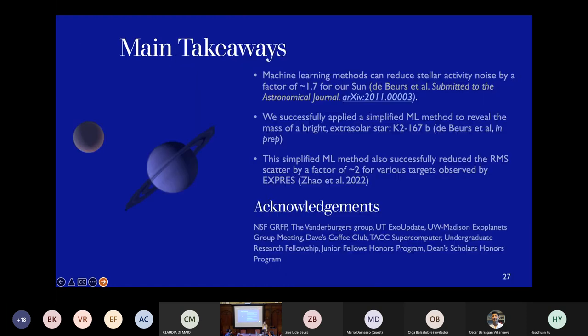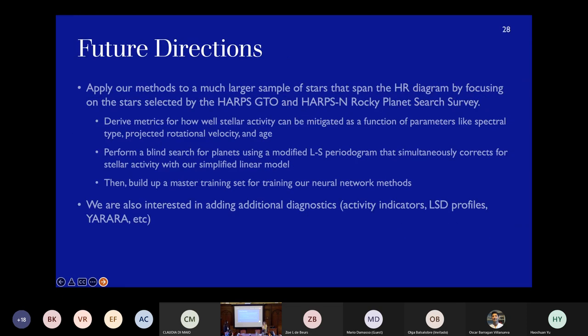But yeah, I think with that, my main takeaways is that machine learning methods can reduce stellar activity noise by a factor of about 1.7 for the sun. And we found that we could successfully also apply a simplified method to reveal the mass of a bright extrasolar star. And then this method can also be applied to other instruments like ESPRESSO and reduce the scatter by a factor of about two. And before I conclude, I have some future directions.